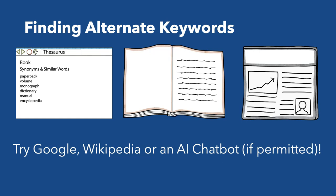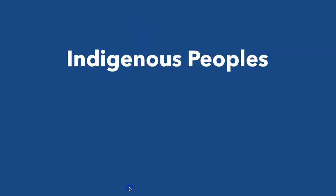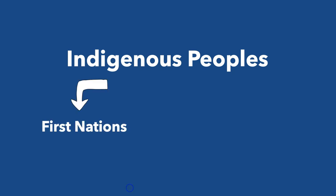Alternate keywords can be very helpful in finding additional sources on your topic. For example, if you're searching the keywords Indigenous Peoples, you may want to consider broadening your search by adding terms such as First Nations or Aboriginal to address terminology changes.